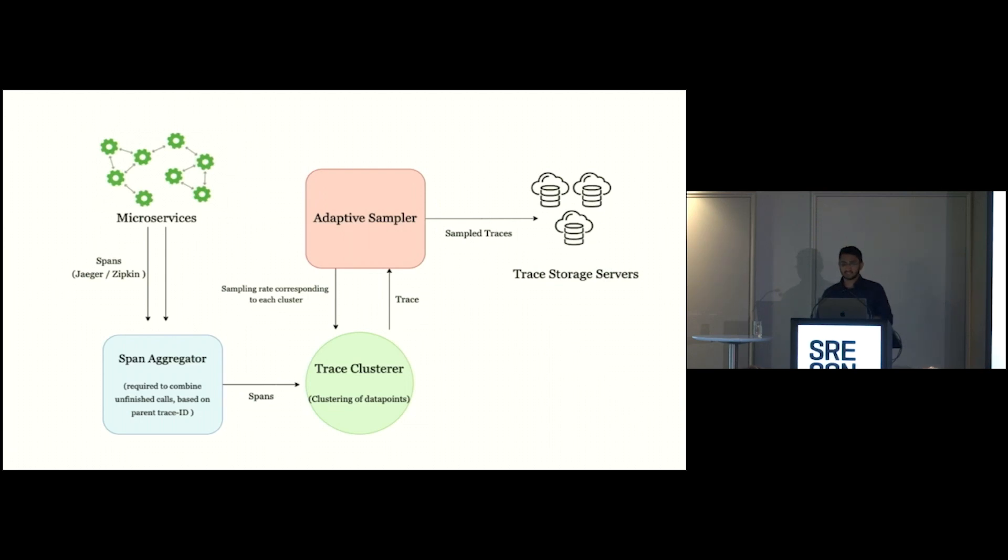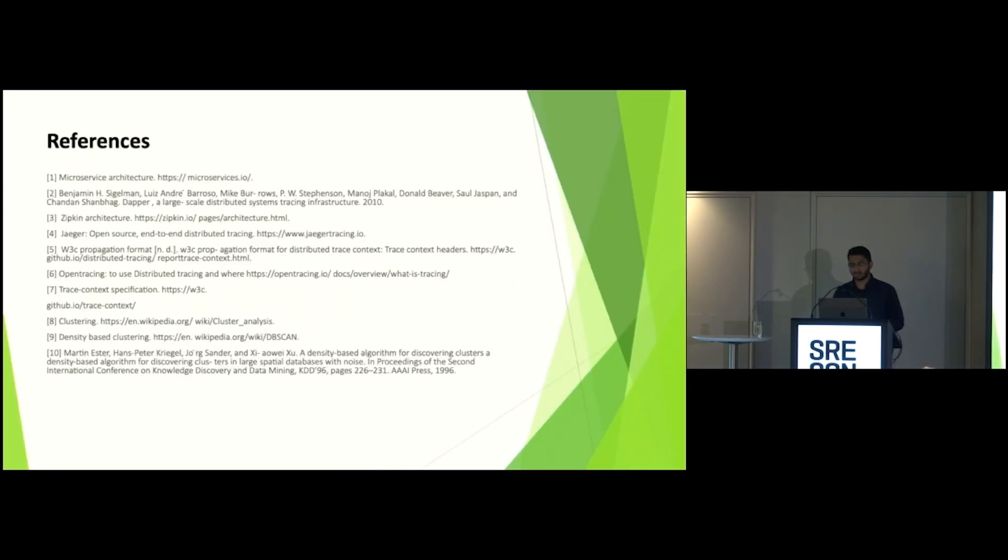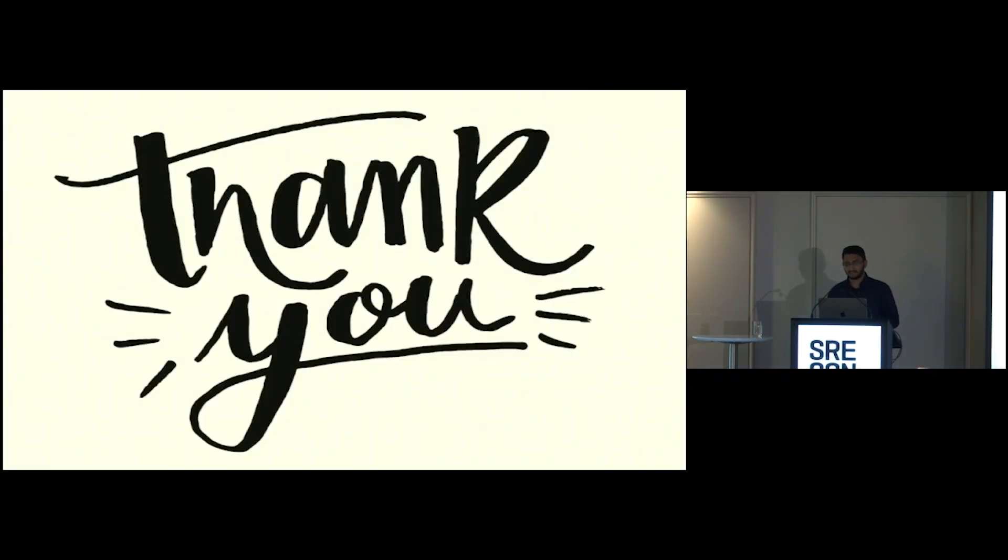So this is the whole thing that we have implemented in order to get better results out of the distributed tracing, and it's a working progress where the adaptive sampler rate function, which I mentioned, is still learning and we're still trying to improve that. And the details of it, maybe we can ping me and we can discuss offline if there's a particular function that we are using and the nuances of it and how certain parameters are tweaked and why it is tweaked, we can obviously discuss about it. These are the references that we took. Thank you.